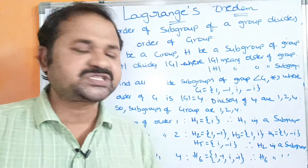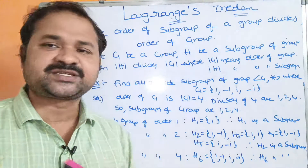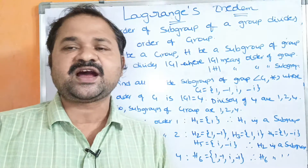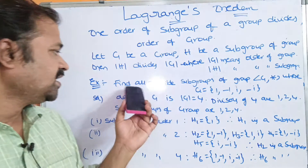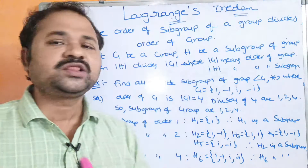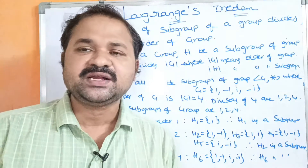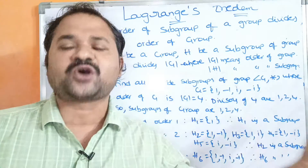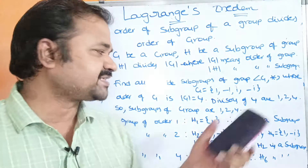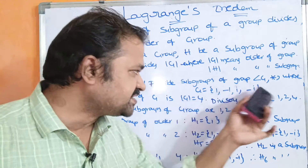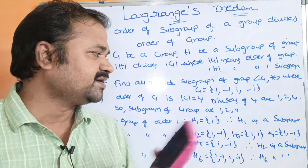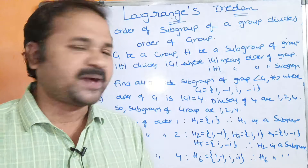Here the group contains 4 elements: 1, -1, i, -i. We have to find out all the possible subgroups of this group.